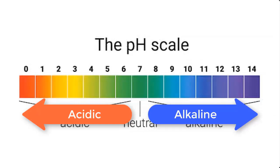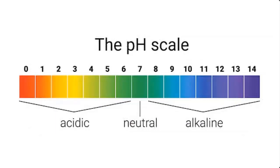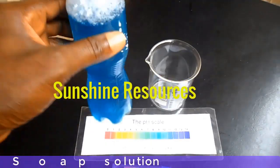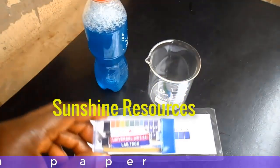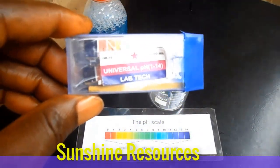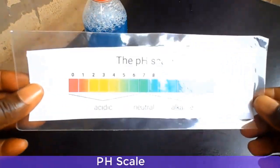Every unit on the scale is represented by a color. In our test, what we're going to do is match the color of our universal pH paper with the pH scale color, and that will determine the pH of our solution. Now let's go into testing our soap solution. This is our liquid soap solution, this is the universal pH paper, and this is the pH scale.